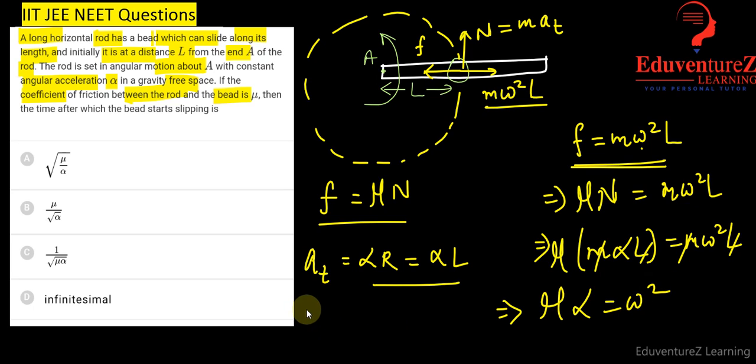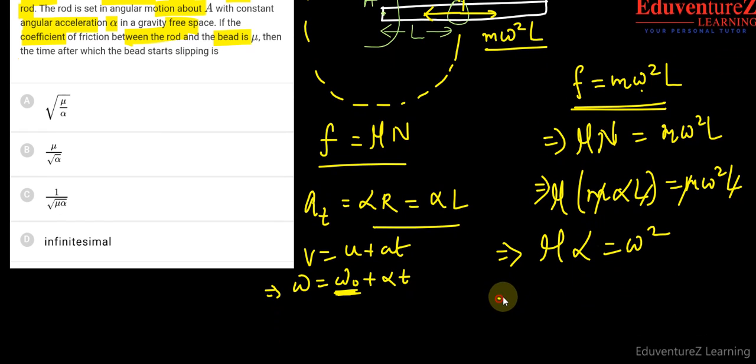We know that V equals U plus AT. The similar equation for circular motion is omega equals omega naught plus alpha T. Omega naught is 0 because initially the rod starts rotating from 0. So omega becomes equal to alpha T, or omega equals alpha T whole square.